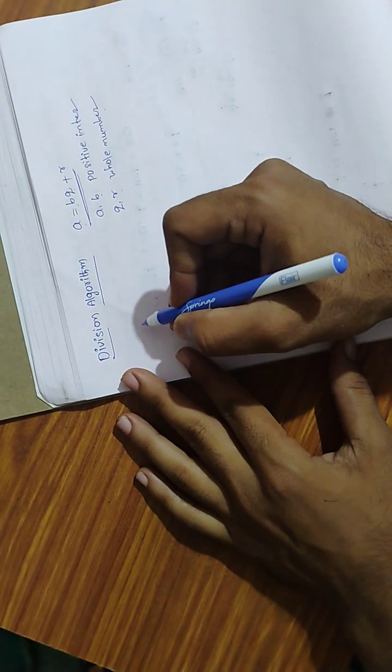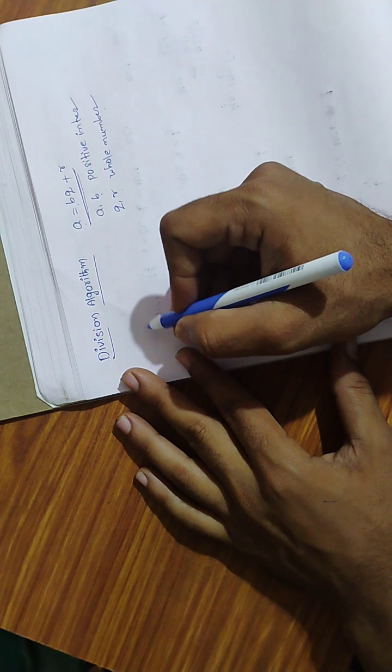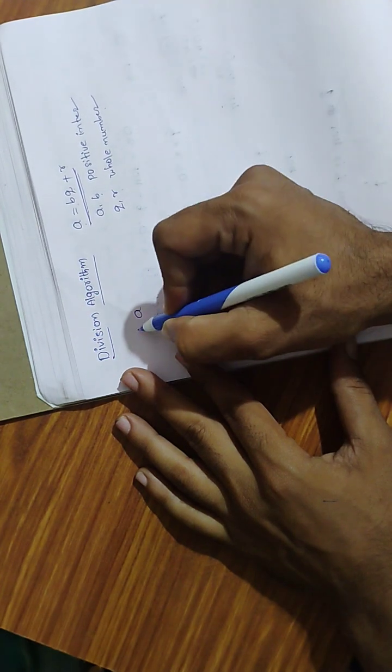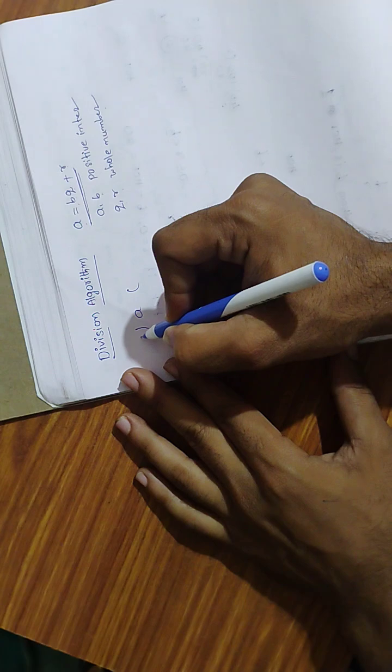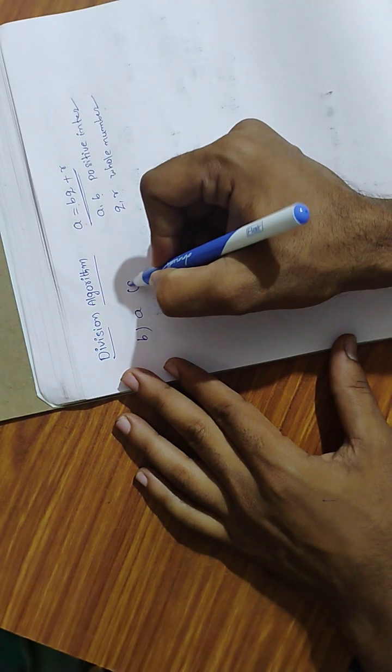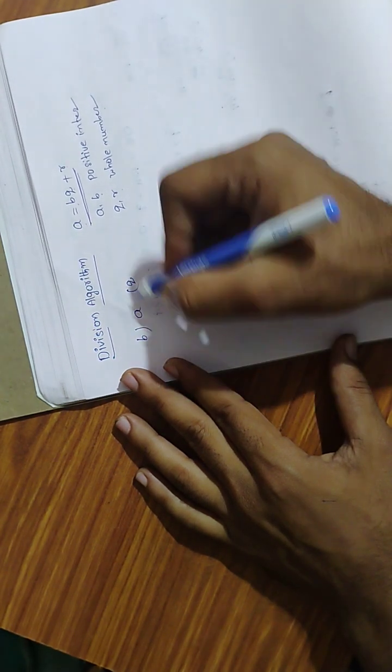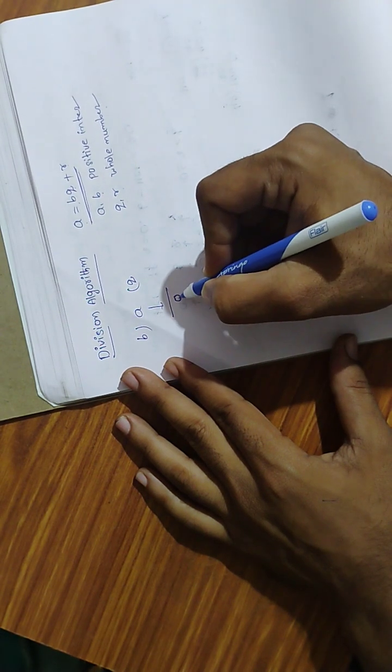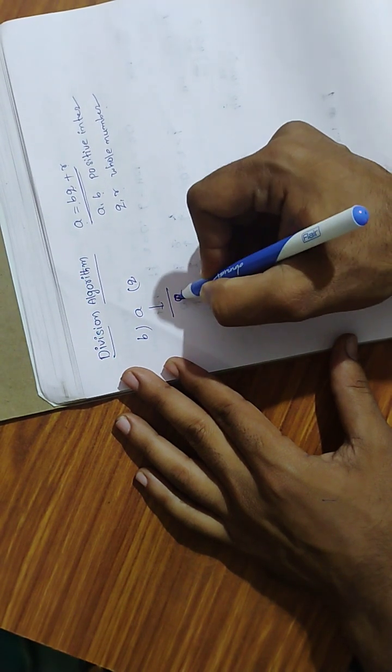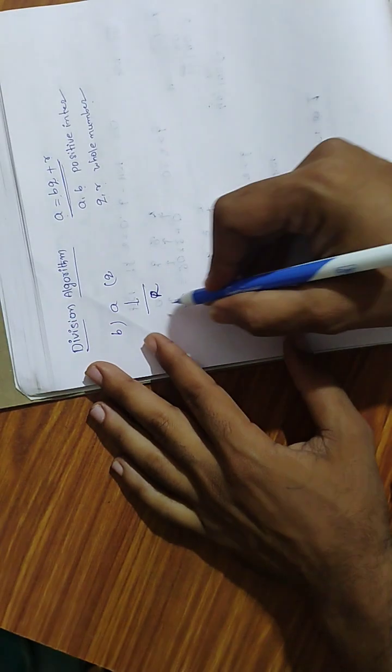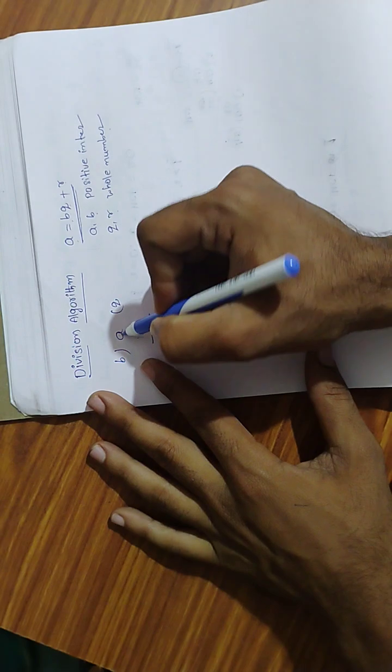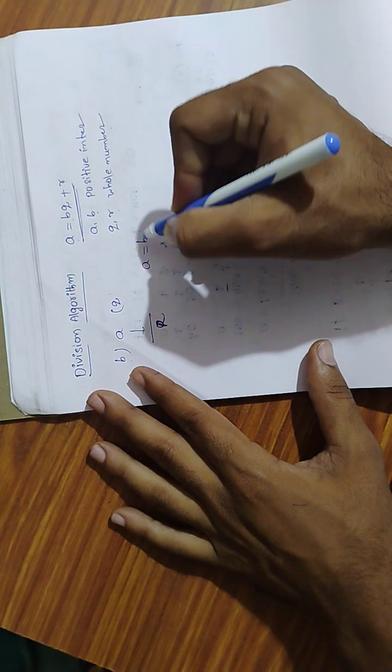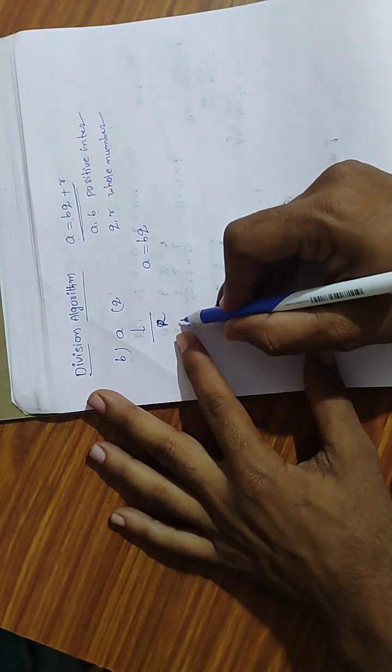When we are dividing any number by another number, we get a quotient and a remainder. The remainder can be zero or something. This relation shows that when we multiply B into Q and add the remainder, we will get the A value.